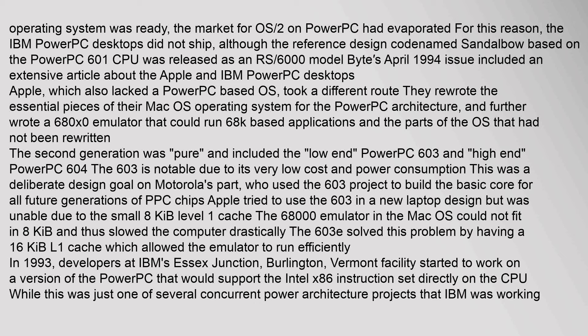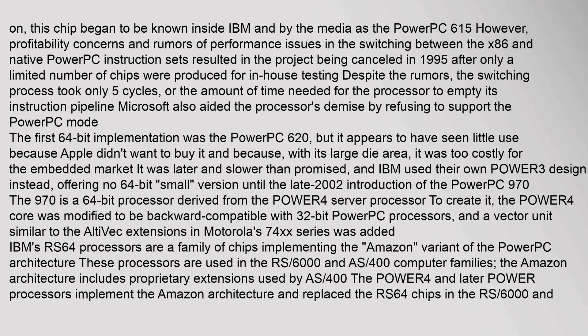The second generation was pure PowerPC and included the low-end PowerPC 603 and high-end PowerPC 604. The 603 is notable for its very low cost and power consumption, a deliberate design goal by Motorola, who used the 603 project to build the basic core for all future generations of PPC chips. Apple tried to use the 603 in a new laptop design but was unable due to the small 8KB cache. A chip designated the PowerPC 615 was designed to run both x86 and native PowerPC instruction sets, but profitability concerns and rumors of performance issues resulted in the project being cancelled in 1995 after only a limited number of chips were produced. Despite the rumors, the switching process took only five cycles. Microsoft also aided the processor's demise by refusing to support the PowerPC mode.